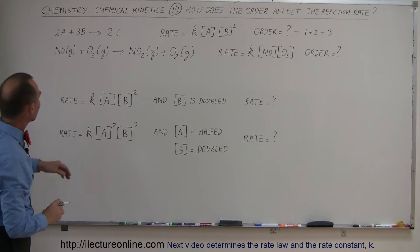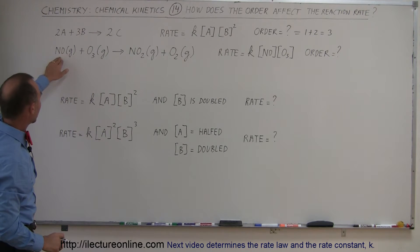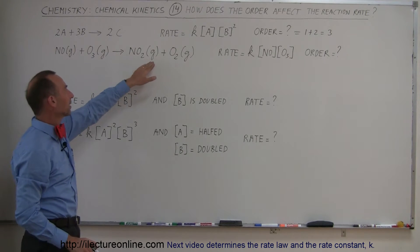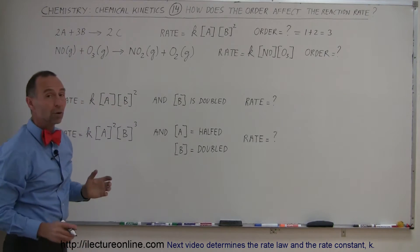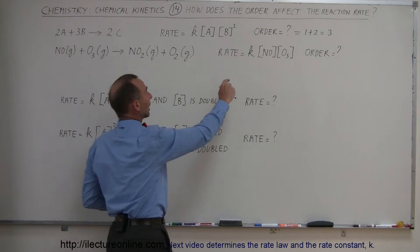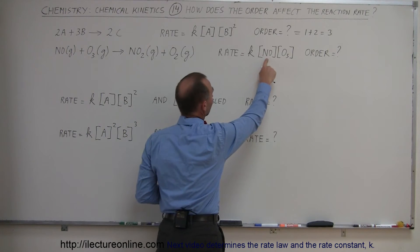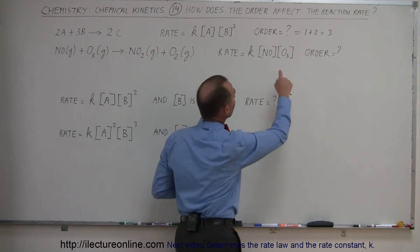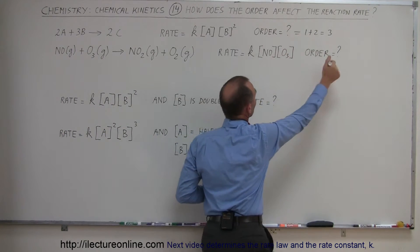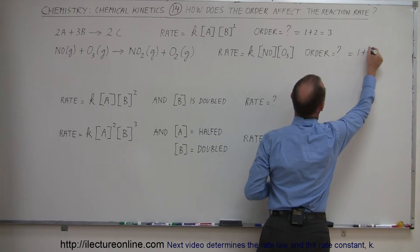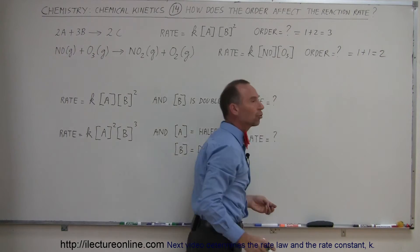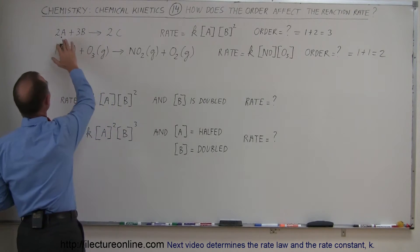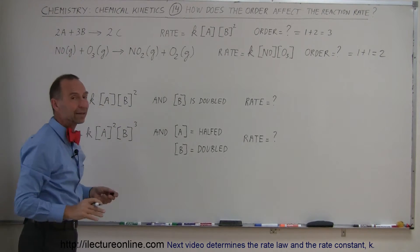And on the next one here, we have nitric oxide and we have ozone combined to form nitrogen dioxide and oxygen gas. And so in this particular case, the rate is equal to K times the concentration of nitric oxide and ozone. And so what is the order in that case? Well, even though we don't write it, we have a 1 and a 1 there, so this is equal to 1 plus 1 equals 2. So that's how we determine the order, and remember that the order has really nothing to do with the coefficients in front of the reactants and the products.